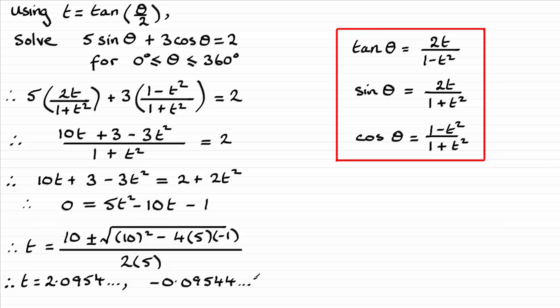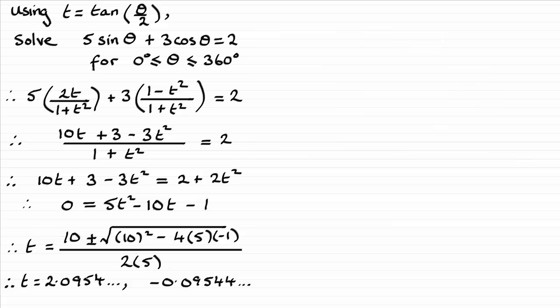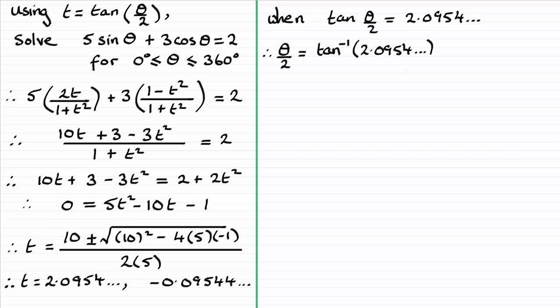Okay, so now we've got that, let's just remove the trig formula there. All I need to do is take each of these values in turn. So let's start with when tan theta upon 2, that's t in other words, equals 2.0954 and so on. So we take the inverse tan of both sides and we end up with theta upon 2 equals the inverse tan of that value.